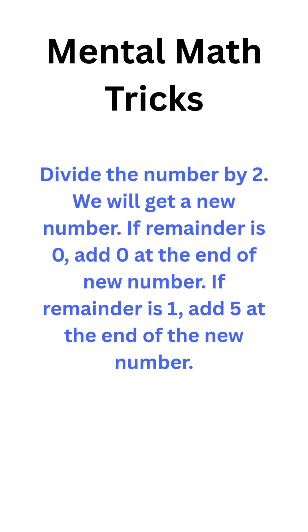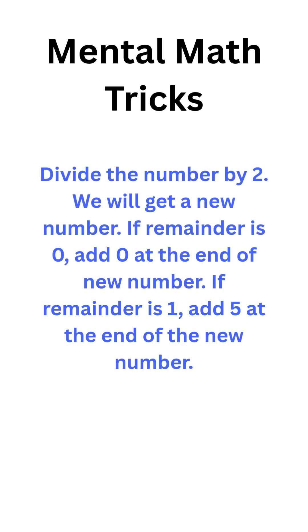In short, divide the number by 2. If remainder is 0, add 0 at the end. If remainder 1, add 5 at the end. It is that simple.